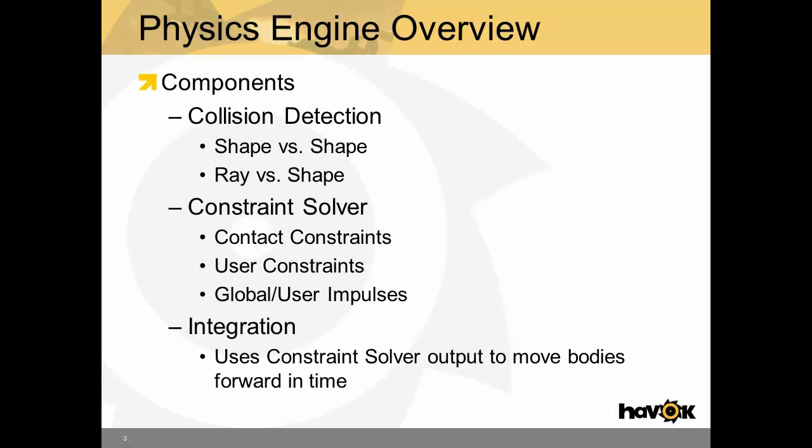There are several main components to a physics engine which allows it to provide these services. For instance, collision detection. This is your shape versus shape or your ray versus shape algorithms. These provide contact points between shapes or contact points between a ray and a shape.